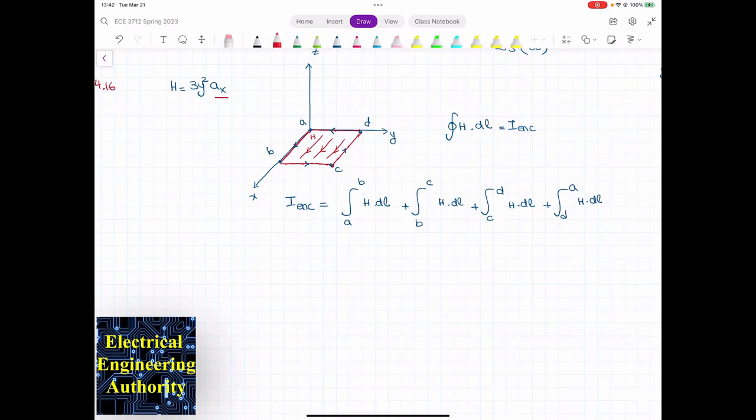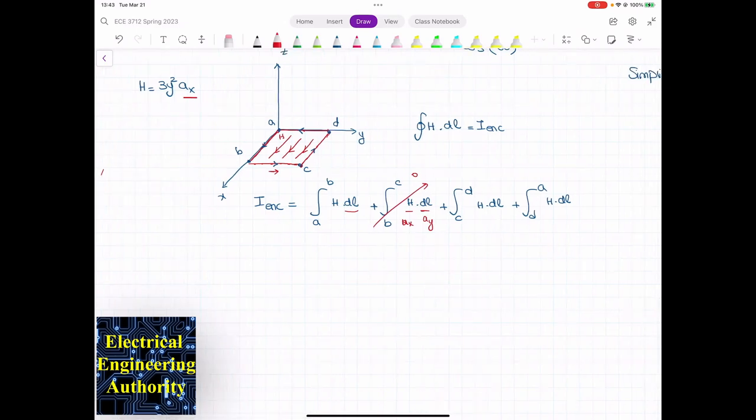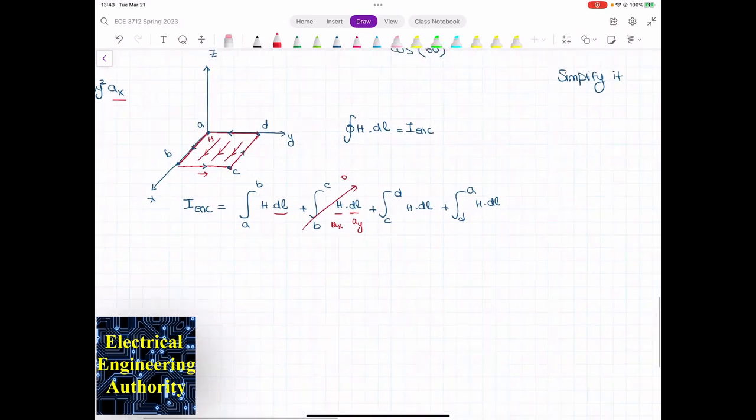H is in the x direction. So wherever I have dL in any direction other than x, then it means that it will be zero. Because ax dot ay is zero, ax dot az is zero. When I go from A to B, do you agree that dL is in the x direction? So this won't be zero. When I go from B to C, dL is in the y direction, so dL has ay. X has ax, so this will be zero. From C to D, I do have negative ax, so we're good there. We don't have to make it zero.